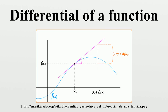With this interpretation, the differential of f is known as the exterior derivative, and has broad application in differential geometry because the notion of velocities in the tangent space makes sense on any differentiable manifold. If, in addition, the output value of f also represents a position, then a dimensional analysis confirms that the output value of df must be a velocity. If one treats the differential in this manner, then it is known as the push forward, since it pushes velocities from a source space into velocities in a target space. Although the notion of having an infinitesimal increment dx is not well defined in modern mathematical analysis, a variety of techniques exist for defining the infinitesimal differential so that it can be handled in a manner that does not clash with the Leibniz notation.